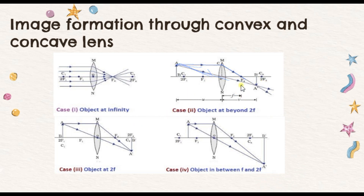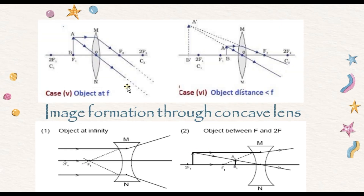When these two rays meet, they form an image which is real and inverted. Similarly, when the object is placed at 2f, the image formed is the same size as the object. When the object is between 2f and f, the image formed is beyond 2f. When the object is at f, the image is formed at infinity and is very large in size. When the object is placed between f and O, the image formed is virtual and larger than the object — this kind of application is used in microscopes.